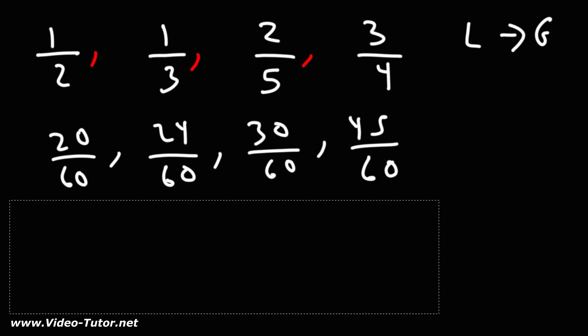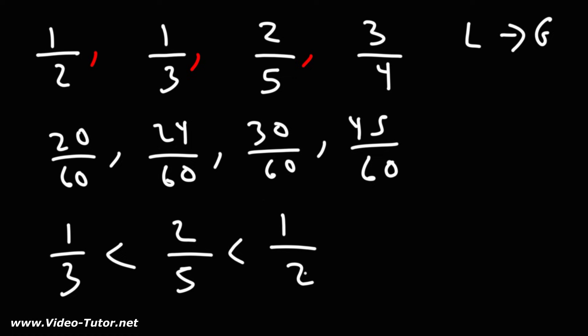So let's rewrite it using the original fractions. 20 over 60 that came from 1 over 3. 1 over 3 is less than 24 over 60 that came from 2 over 5. 30 over 60 that reduces to 1 half and 45 over 60 that came from 3 over 4.